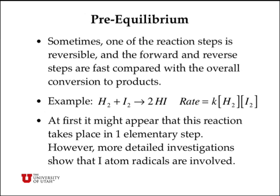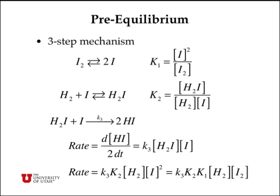The second situation arises when one of the reactions is slow, but some of the first steps are fast. An example is the reaction of H2 with I2 to form HI. The overall rate law derived from experiments is first order in H2 and first order in I2. You might think this occurs by a single elementary step, but detailed experiments show that iodine atom radicals are involved, so it's actually a more complicated mechanism.